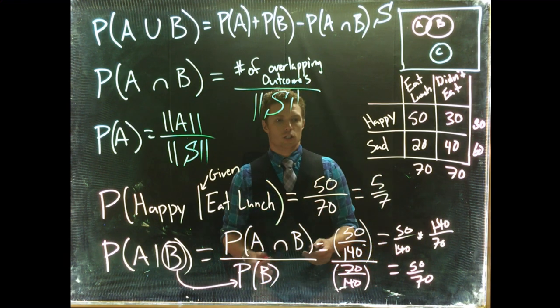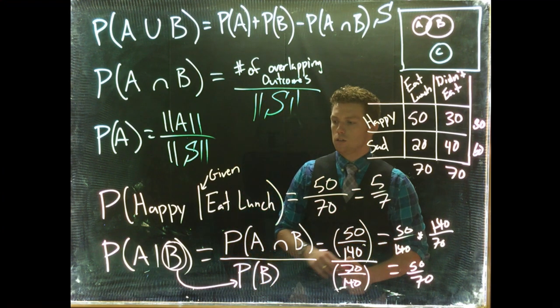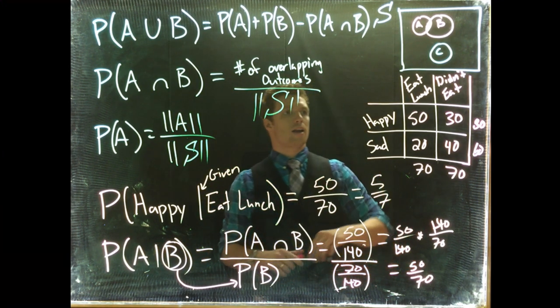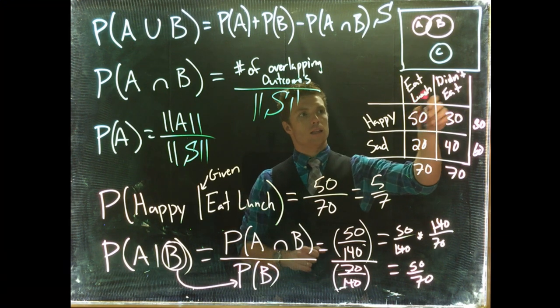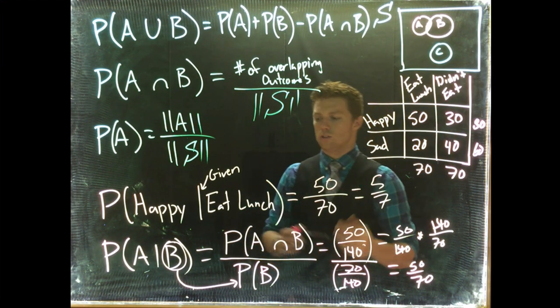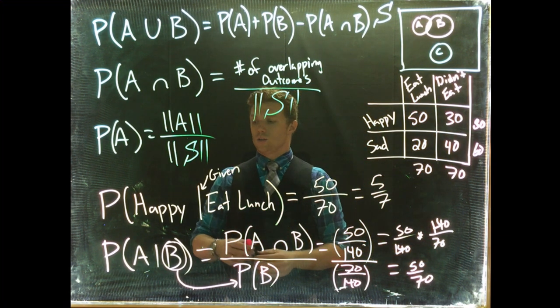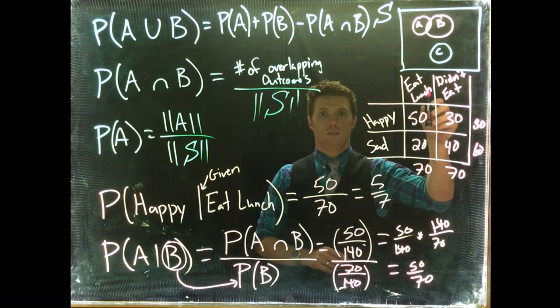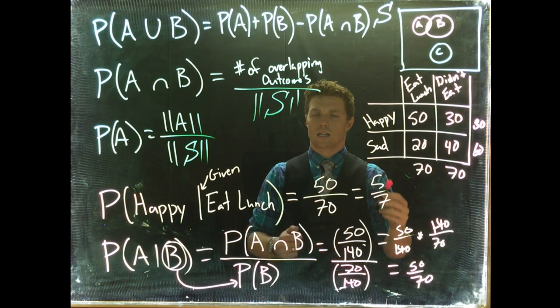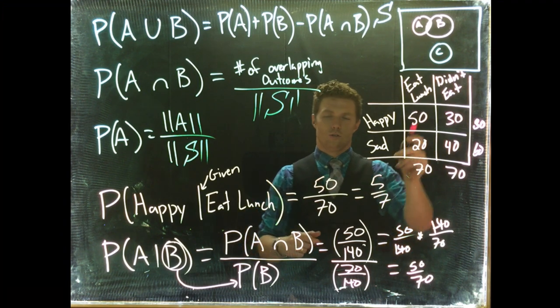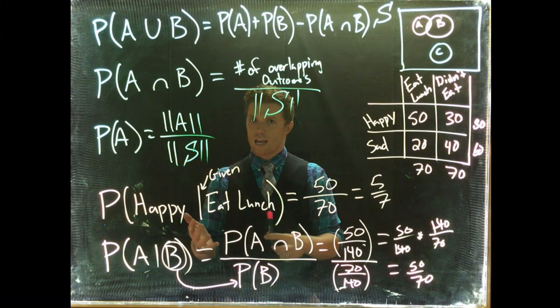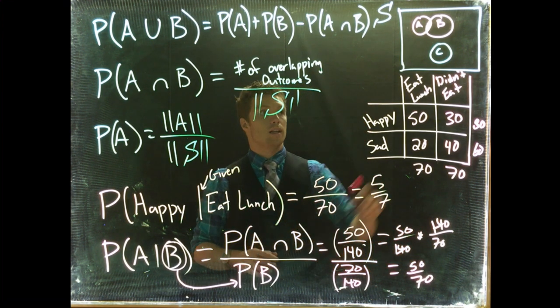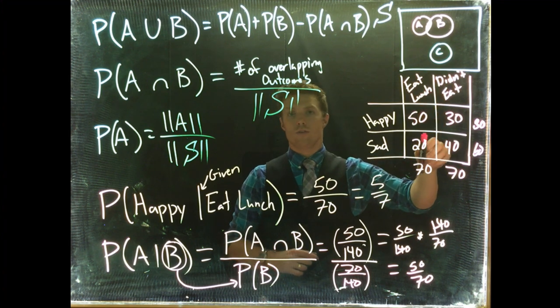So the last thing that we should do is talk about, what about A given B if they were mutually exclusive? Okay, so let's talk about A given B, of eating lunch or didn't eat lunch. So it kind of sounds weird now because we'd say, what is the probability of eating lunch given that you didn't eat lunch? And you're like, wait a second, it's zero. You just told me, given that I didn't eat lunch, what's the probability that I ate lunch? Well, it's zero.